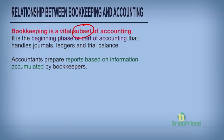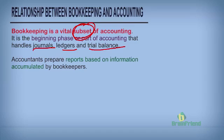Relationship between bookkeeping and accounting. Bookkeeping is a vital subset of accounting. Bookkeeping is under accounting — it is the beginning phase of accounting that handles journals, ledgers, and trial balance. In our further teachings, we shall see in detail what journals are, what ledgers are, and what a trial balance is. Accountants have the obligation to prepare reports based on information accumulated by bookkeepers.